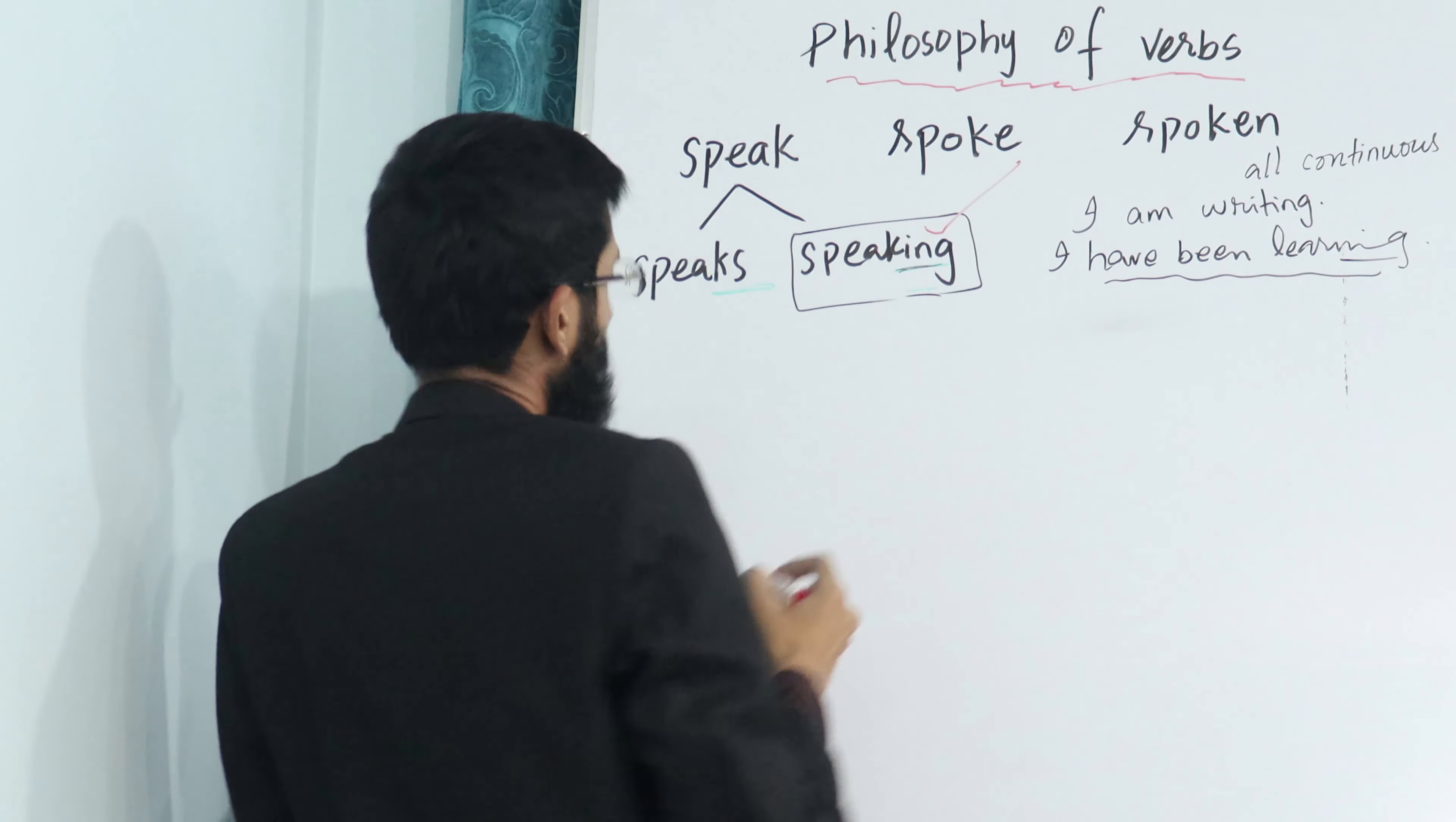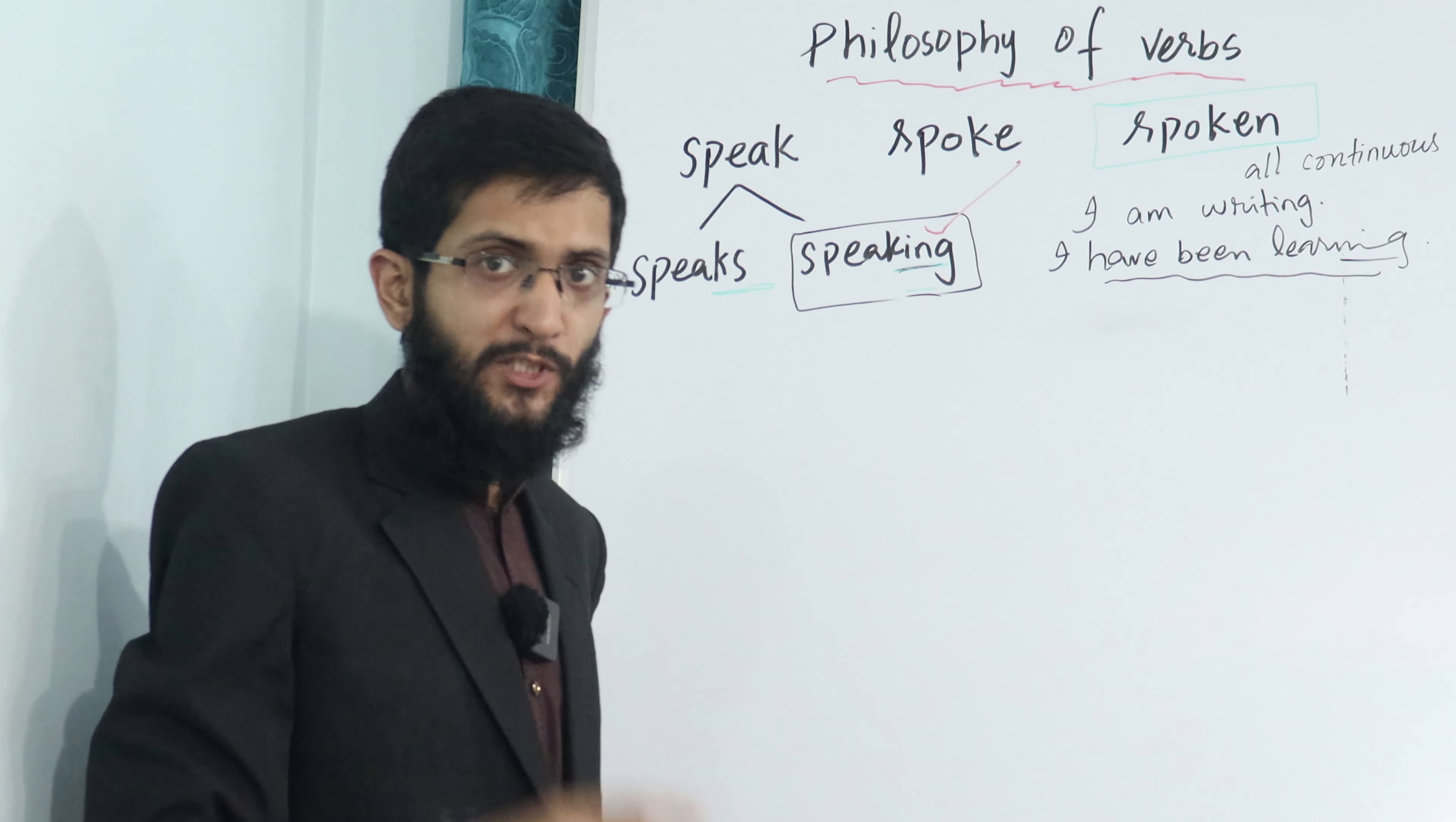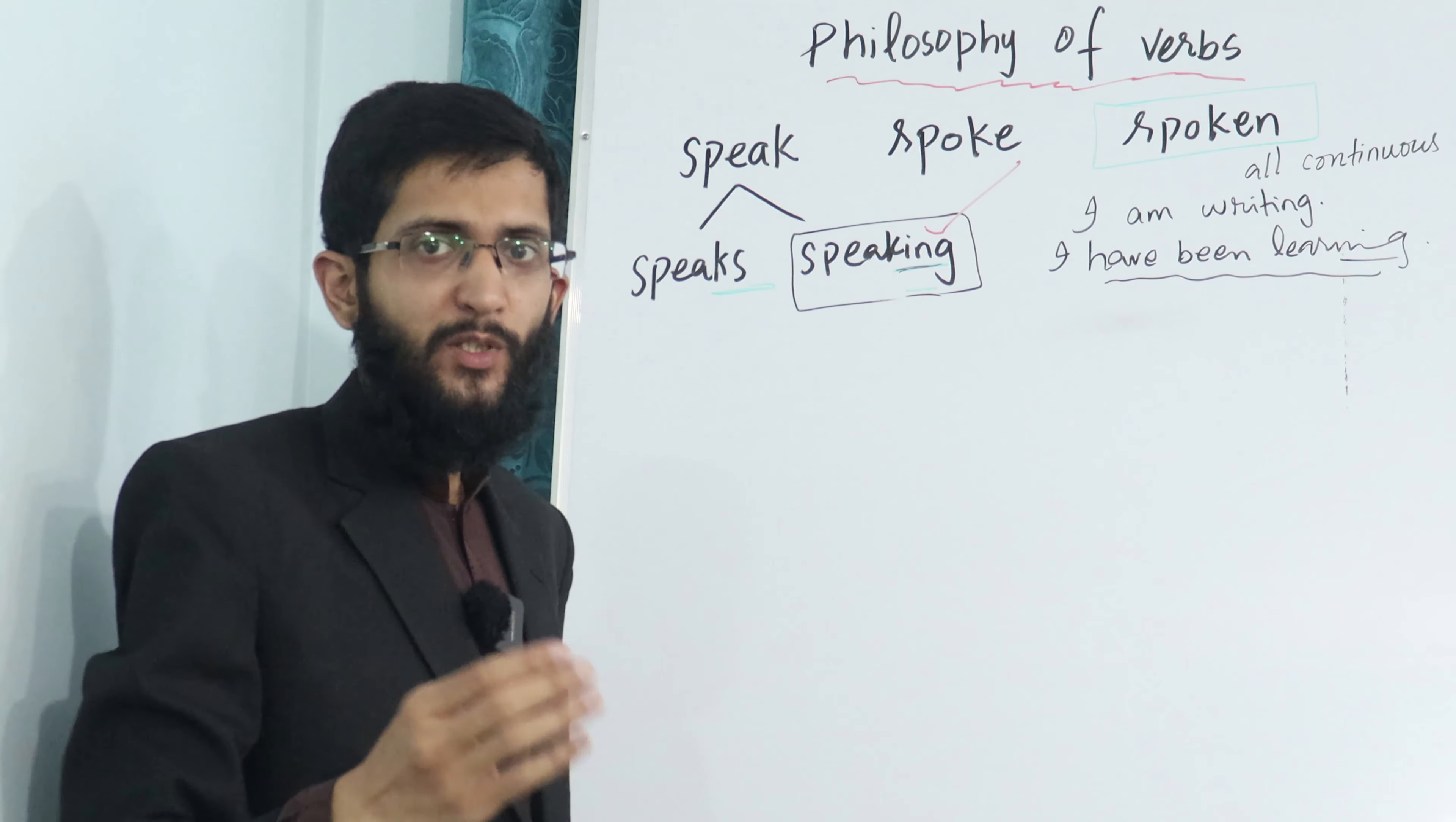Now come to this one: spoken. The third form. We use third form with all perfect tenses and with all passive structures. Let me write few examples: perfect tenses. For example, I have gone, or I have spoken, I have cooked, I have learned, I have written. Written is third form. I have written this example. Written is completion. I had written, this is past. I will have written, this is future.